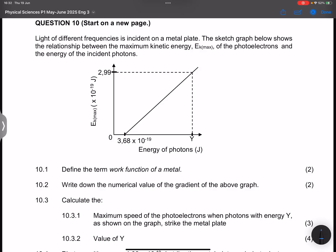They say write down the numerical value of the gradient of the above graph. Please remember, when you're given this graph of Ek max against the energy of the photon, the gradient there is actually Planck's constant. Remember that you are given Planck's constant, that's 6.63 times 10 to the power minus 34.